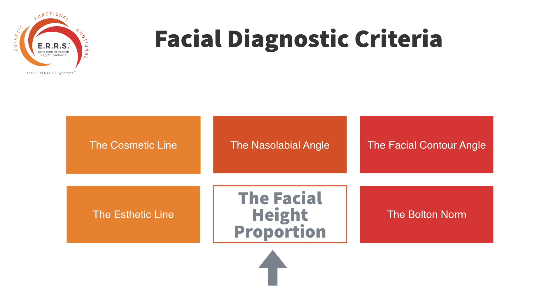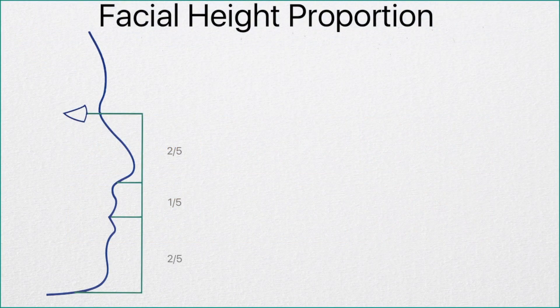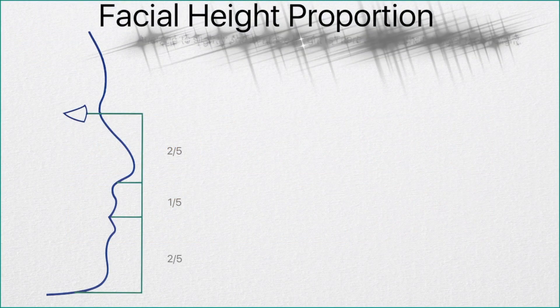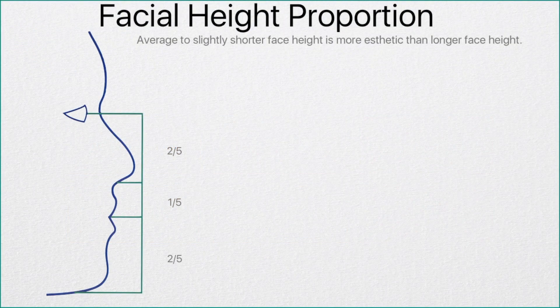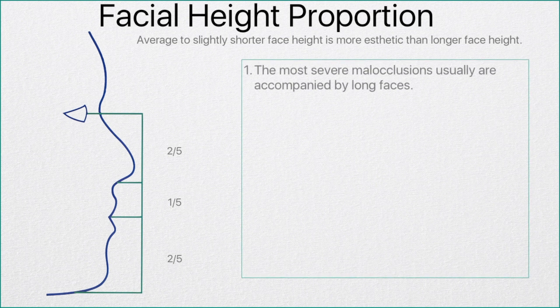Welcome back. This segment is entitled Diagnostic Criteria: Facial Height Proportion. You measure the distance between the pupil and subnasale, and that vertical height should be two-fifths of the entire face height. The upper lip from subnasale to stomion should be one-fifth, and from stomion to soft tissue menton should be two-fifths. That is considered ideal facial height proportion.